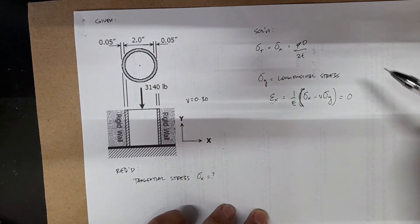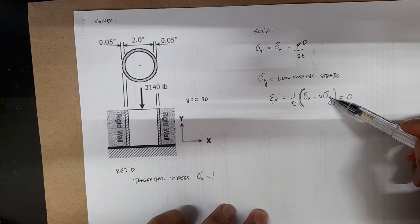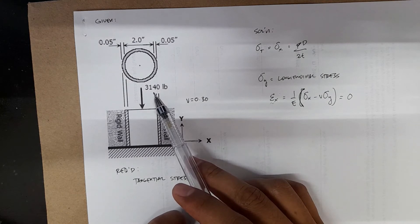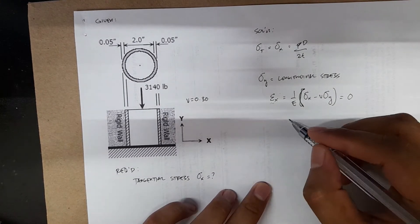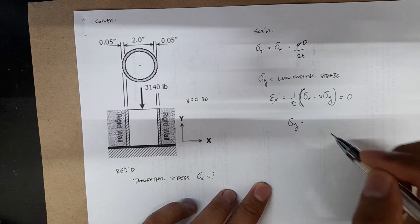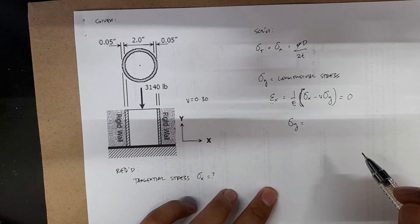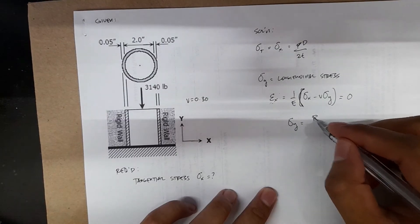Therefore, we only have two unknowns: stress x and stress y. Stress y can be computed based on the given compressive force. Stress y is a compressive stress caused by P equals 3,140 pounds, just P over A.